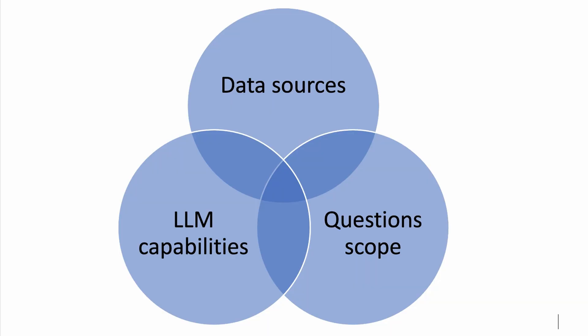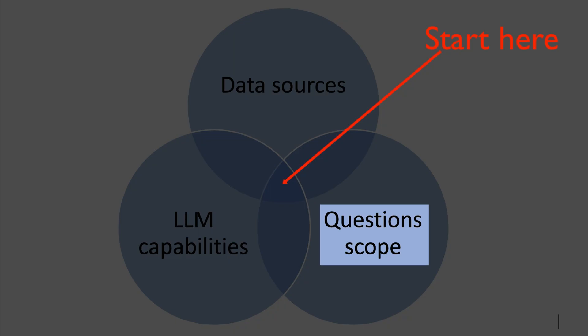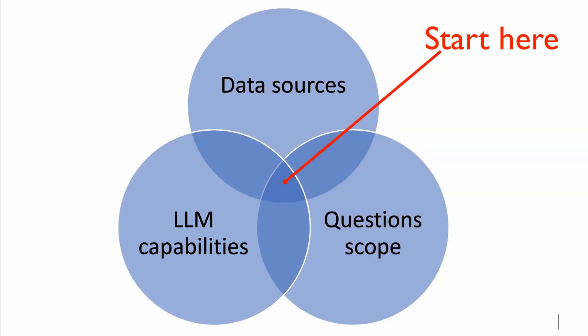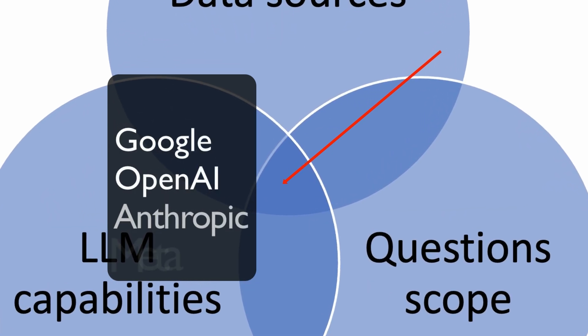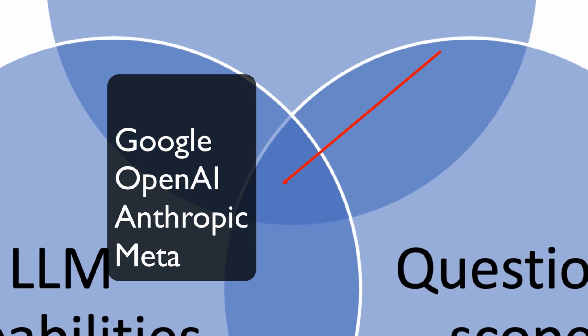Let's stop here and talk about the limitations and what you should build today. Honestly, you can't simply connect LLMs like GPT-4 to your databases and expect it to magically give customers answers to any questions — it just doesn't work. Your initial application must be constrained to a sweet spot between a few select data sources, the scope of business questions, and the capabilities of the large language models. This sweet spot will rapidly expand as Google, OpenAI, Anthropic, and Meta compete ferociously and release more and more powerful models.